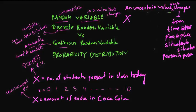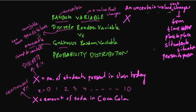Since we are talking about random, uncertain values, we are automatically talking about probability — how probable is it that a certain value will occur. For example: what is the probability that four students will show up? What is the probability that the Coca-Cola bottle has more than 250 ml of soda? If you were absolutely certain, it would not be a random variable, but since we are uncertain, we are in a probabilistic situation.